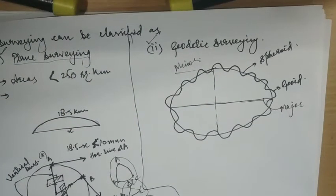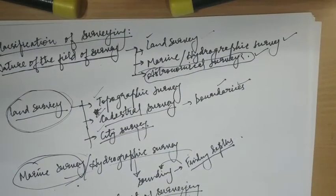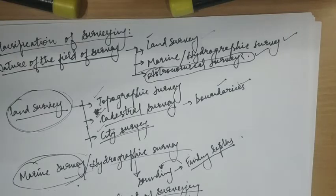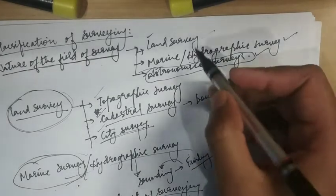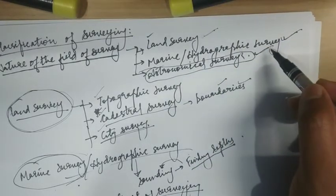Now we will start with the functional classifications of surveying — or simply, classification of surveying. Classification is done on the basis of various categories. Starting with the first category: the nature of the field of survey. As per this category, surveying may be classified into three types: first is land survey, second is marine survey, and third is astronomical survey.